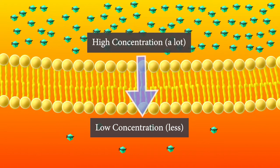Naturally, molecules and ions move from areas of high concentration to low concentration down their concentration gradient. But what if you need to move them the other way, from low to high concentration against their concentration gradient? This requires energy.